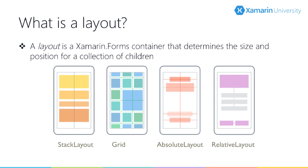The four panels are Stack, Grid, Absolute, and Relative. All of these own a collection of children, and their job is to calculate the size and position of those children and recalculate as things change — like if the size of an element changes. For example, if you change the text on a label, that would force a recalculation. Or if you rotate the device, a recalculation happens.